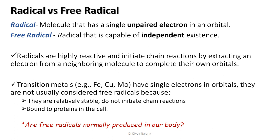Do free radicals get produced normally in our body? Consider this analogy: imagine a factory where you put in raw material to get a product. Certainly the amount of raw material you put in does not equal the amount of product made — there are byproducts, and some raw material is spent generating energy, noise, or wear and tear. Our body is similar: we put in fuel in the form of lipids, proteins, and carbohydrates.